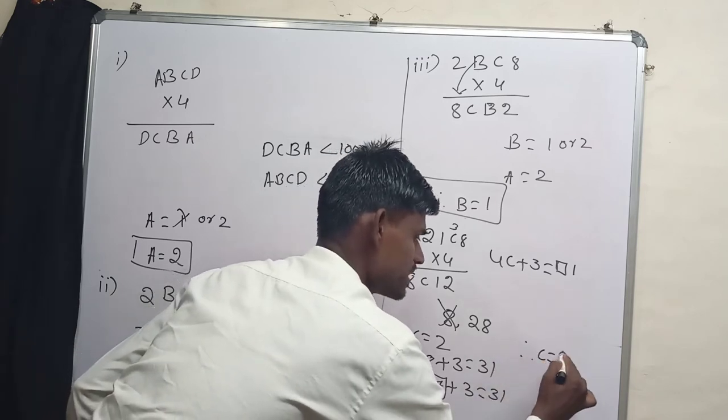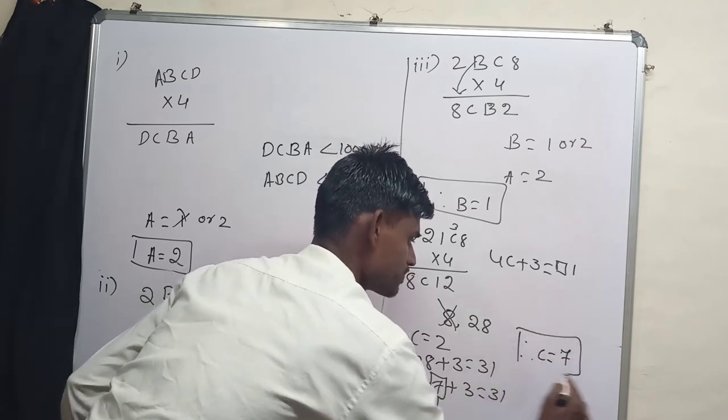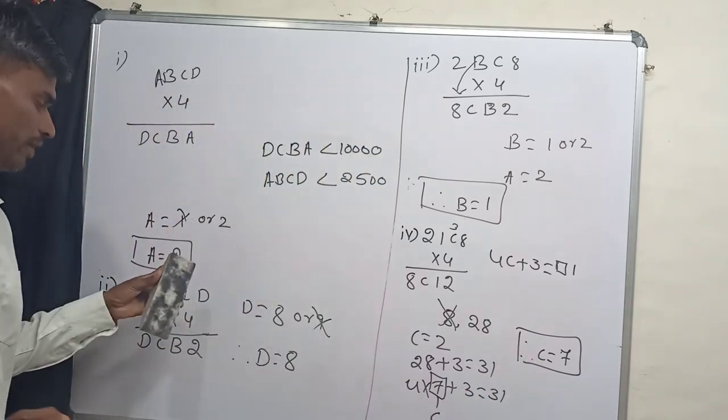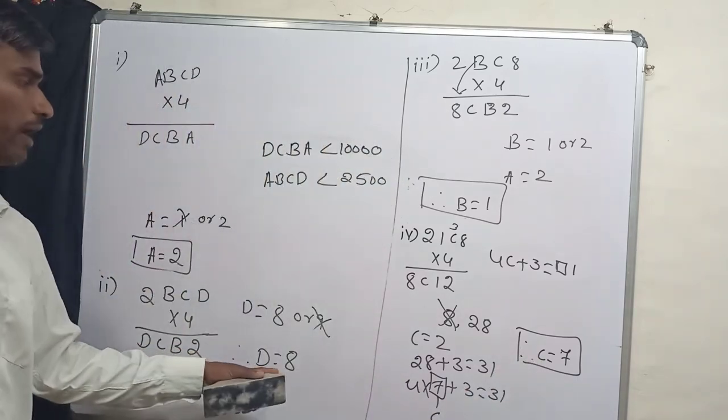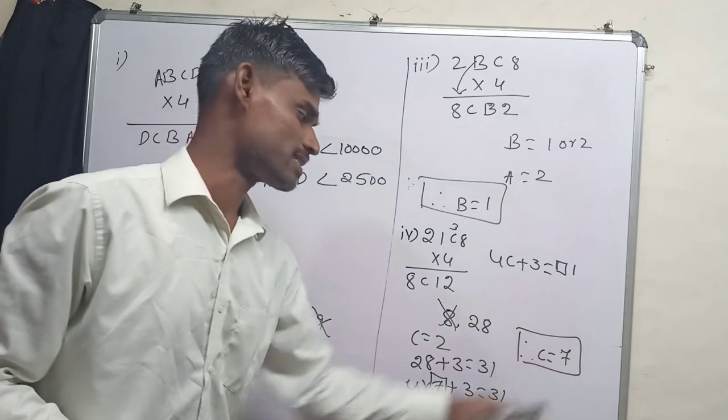So I am going to write 8. Therefore, C is equals 7. So now we have the value of A, we have the value of D, B and C.